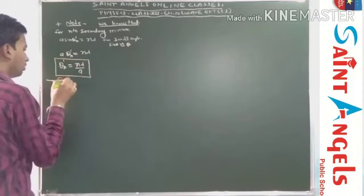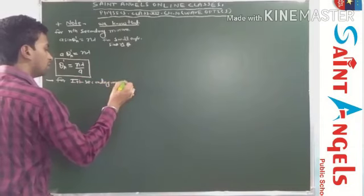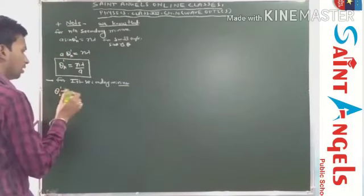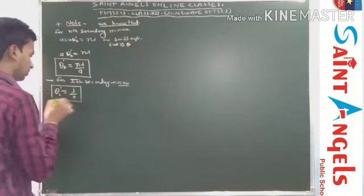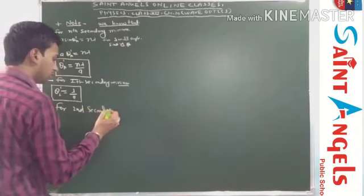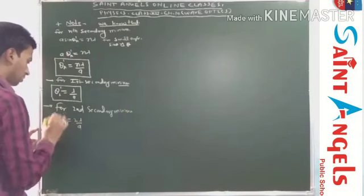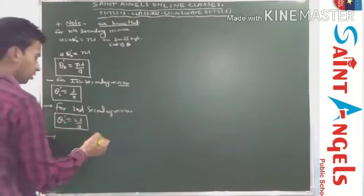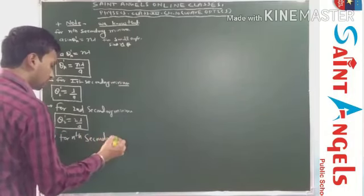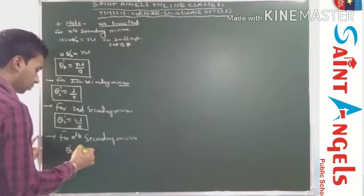For first secondary minima, the angular position θ₁' = λ/a. For nth secondary minima, θₙ' = nλ/a.